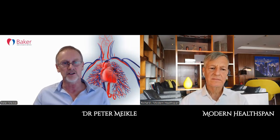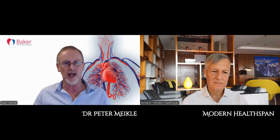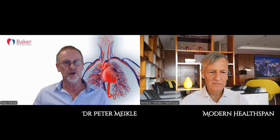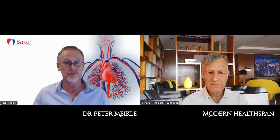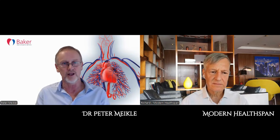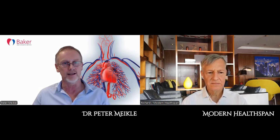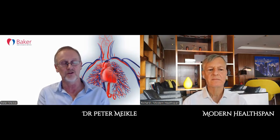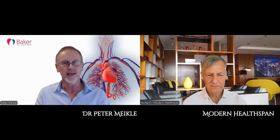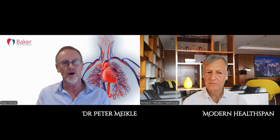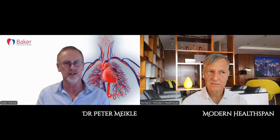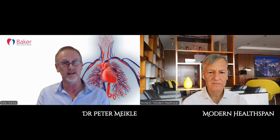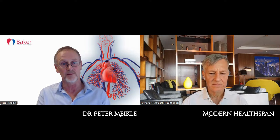One of the major genetic risk factors is a gene called APOE. You can have an APOE e2 allele, an APOE e3 allele, or an APOE e4 allele — three different variants of this particular mutational variant in the APOE gene. If you are APOE e4, you have about a three to four fold increased risk of developing Alzheimer's compared to the e3 allele. If you have an APOE e2 allele, you're about half as likely to develop Alzheimer's, so you have a reduced risk.